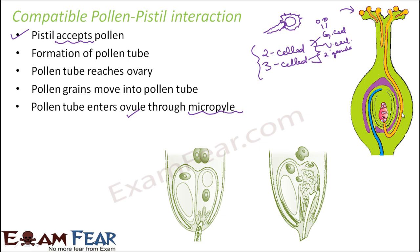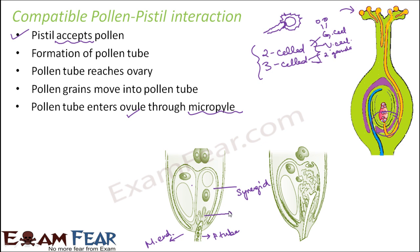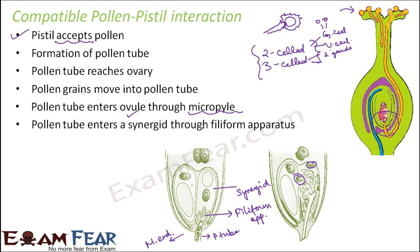Here is a magnified picture of that portion. You can see the end of the pollen tube and the micropylar end, with the chalazal end on the other side. There are two synergids visible here. Towards the bottom of the synergids you have specialized thickened structures called the filiform apparatus, and it is through this filiform apparatus that the pollen tube is able to enter inside the synergid. The pollen tube has entered the synergid and released the two male gametes.